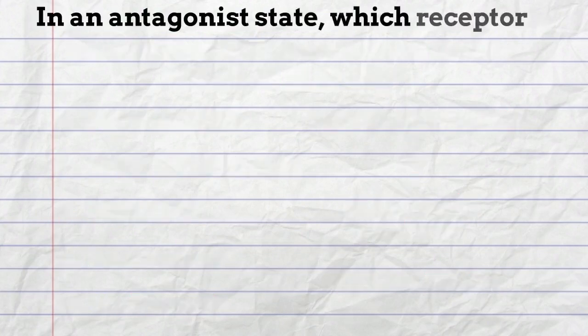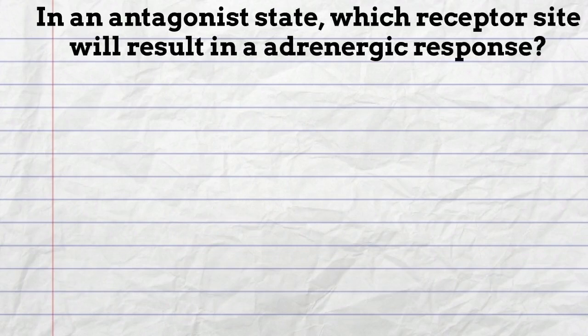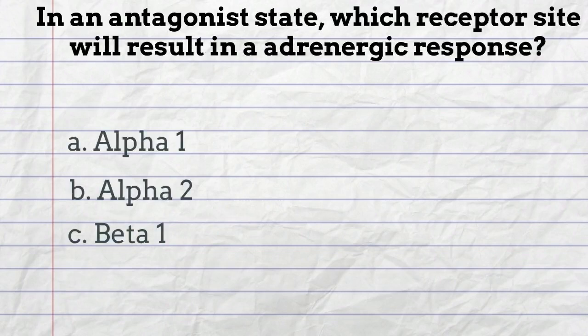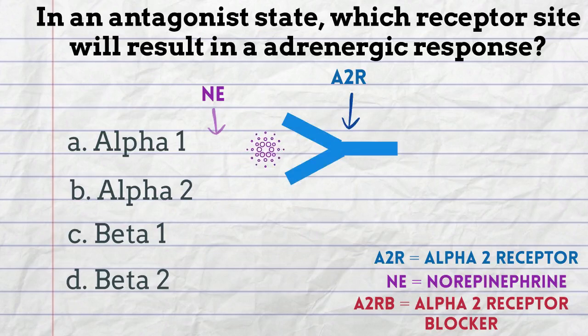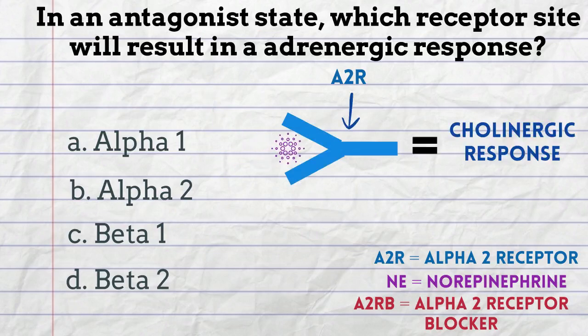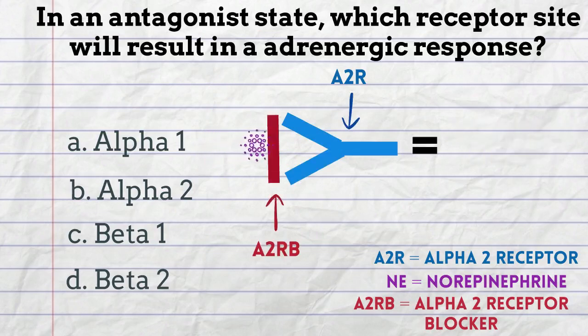In an antagonist state, which receptor site will result in an adrenergic response? Alpha-1, alpha-2, beta-1, beta-2. When norepinephrine binds with alpha-2 receptor sites as an agonist action, a cholinergic response is expected. Therefore, an antagonist or blocking action on this receptor site would lead to the opposite response, being adrenergic symptoms.